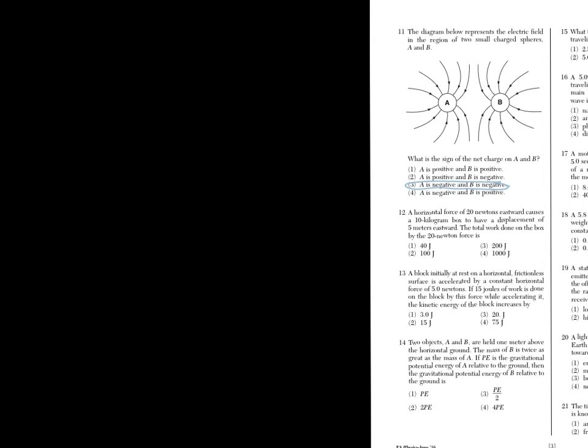Number twelve: the horizontal force of 20N eastward causes a 10kg box to have a displacement of that many meters eastward. The total work on the box by the force is, so this is pretty simple, work is equal to force times distance.